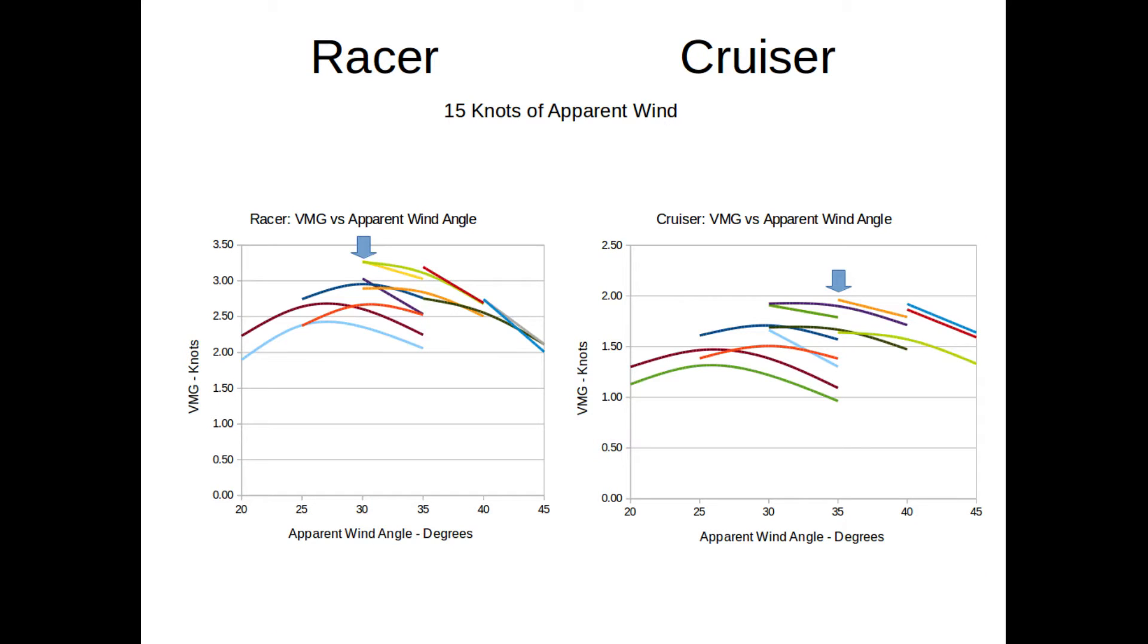The approach to figuring out how to set the sails would be to do a number of computer runs, each one having a different sail shape, apparent wind angle, and sail camber - that's the fullness of the sail. All these runs will be done at 15 knots of apparent wind and we'll compare them on the basis of velocity made good. These two plots show on the left the racer velocity made good versus apparent wind angle. Each one of the colored lines is a different sail configuration and we're just looking for the winner, which is marked with a little blue arrow. The exact same thing is done with the cruiser. The racer ends up at about a 30 degree apparent wind angle, while the cruiser ends up at a 35 degree wind angle.